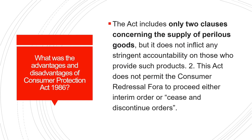What are the advantages and disadvantages of the Consumer Protection Act 1986? The Act includes only two clauses concerning the supply of perilous goods, but does not inflict any stringent accountability on those who provide such products. This Act does not permit consumer redressal fora to proceed with either interim orders or cease and discontinue orders.